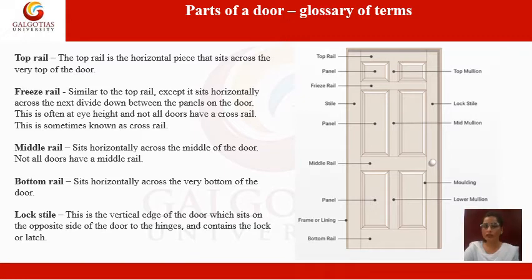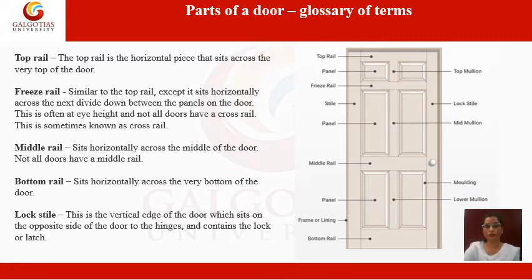The freeze rail — similar to the top rail — sits horizontally across the next division down between panels on the door, often at eye height. Not all doors have a freeze rail, which is also sometimes known as the cross rail. The middle rail, as clear from its name, lies in the middle of the door, and not all doors have a middle rail — it depends on the door's design.